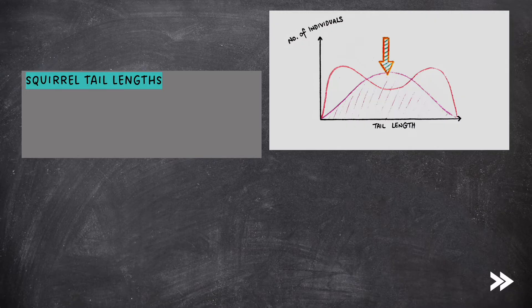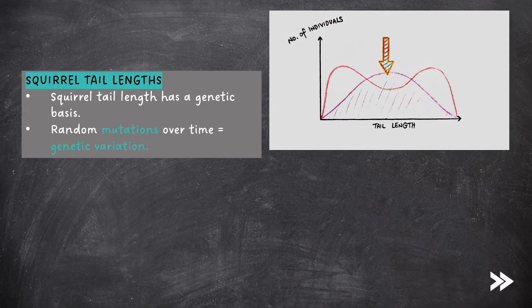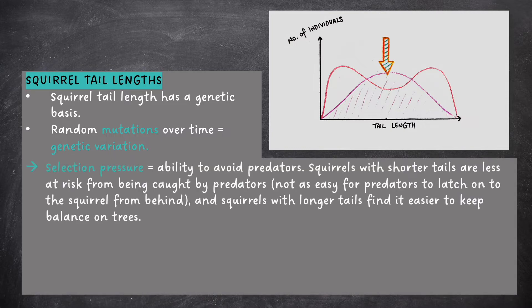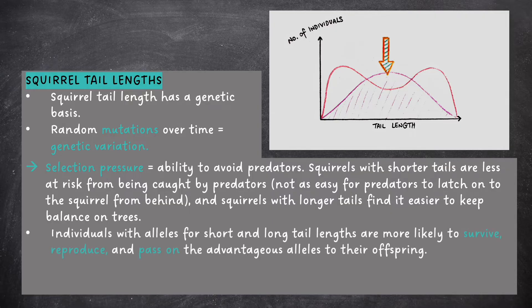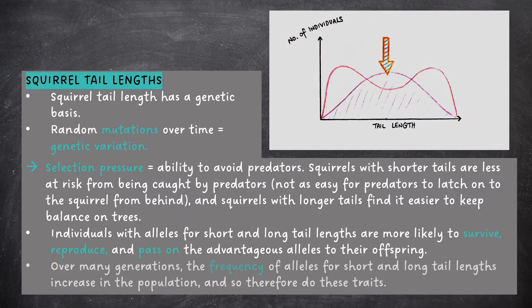Squirrel tail length has a genetic basis. Random mutations over time mean that there is genetic variation in tail lengths within the population. Our selection pressure is the ability to avoid predators. Squirrels with shorter tail lengths are less at risk from being caught by predators, because it is not as easy for predators to latch onto the tail from behind, and squirrels with longer tails find it easier to keep balance on trees, and can hereby more easily avoid predators. Individuals with alleles for short and long tail lengths are more likely to survive, reproduce, and pass on the advantageous alleles to their offspring. Over many generations, the frequency of alleles for short and long tail lengths increases in the population, and so therefore do these traits.